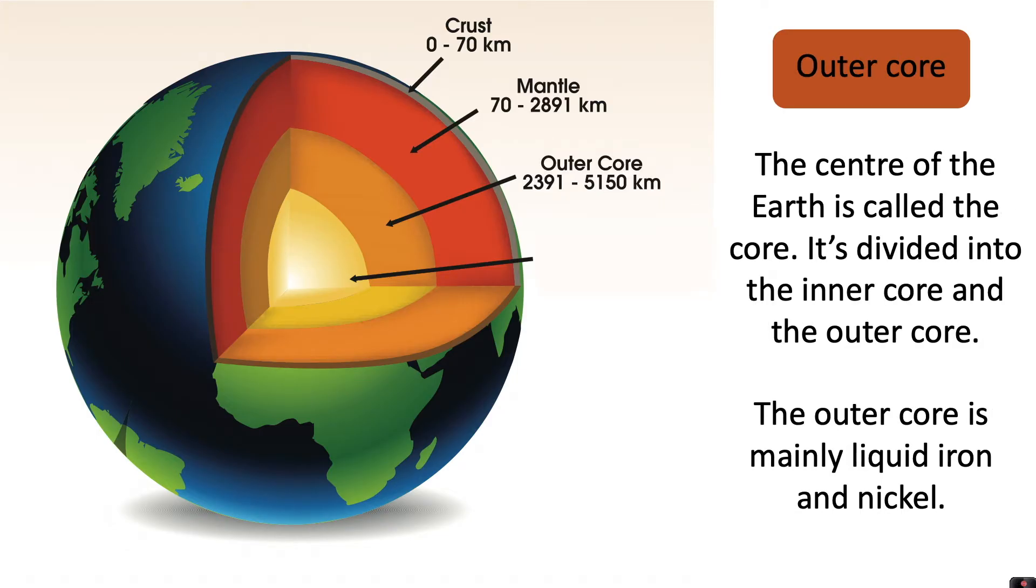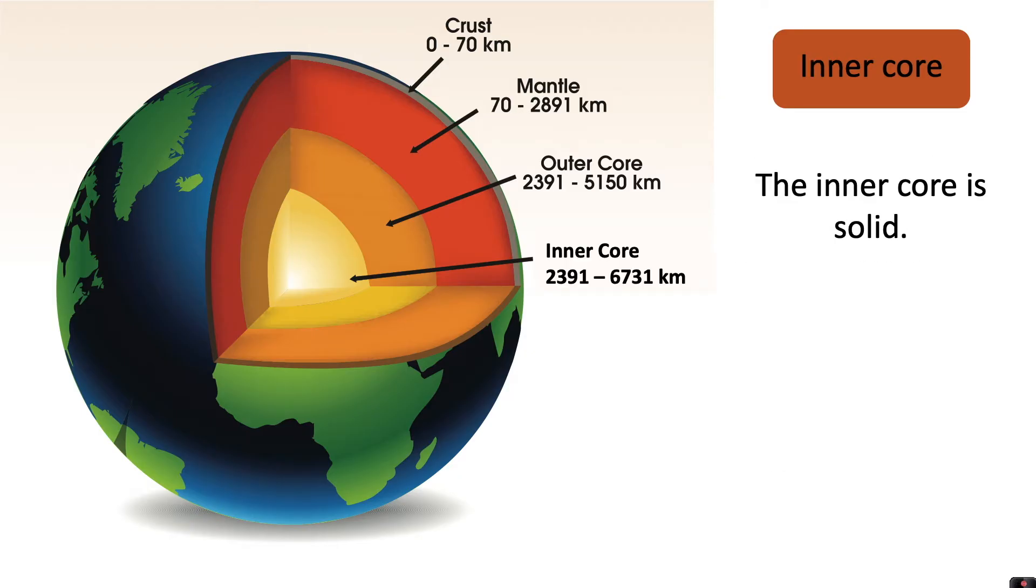The centre of the Earth is called the core. It's divided into the inner core and the outer core. The outer core is mainly liquid iron and nickel. The inner core is solid.